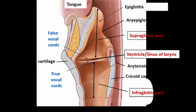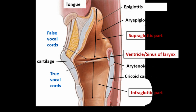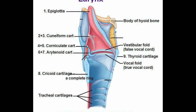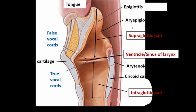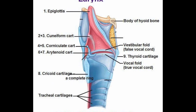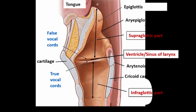Now let's talk about the division of the larynx. The supraglottis extends from the inferior surface of the epiglottis down to the vestibular folds. The glottis — the second part — is approximately one centimeter and represents the opening between the false vocal cords and the true vocal cords, also called the rima glottidis. The subglottis is the third part, extending from the inferior border of the glottis to the inferior border of the cricoid cartilage.